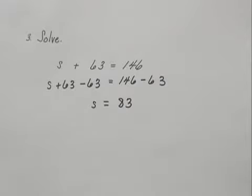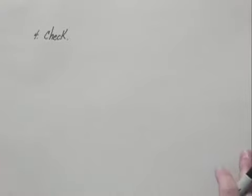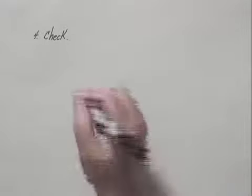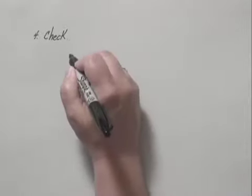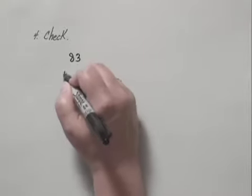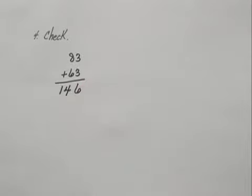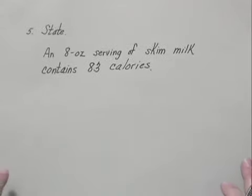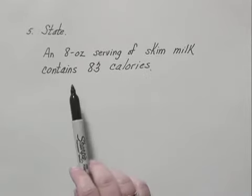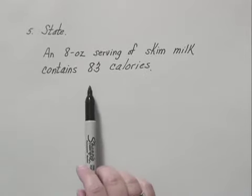Step four — to check — is a very important step. We need to think through the original problem. We're told that there are 63 more calories in whole milk than in skim milk. So we take what we found for skim milk, which was 83, and add 63 to it. We get 146, which we were told was the number of calories in an 8-ounce serving of whole milk. The final step is to state our answer clearly in a complete sentence: an 8-ounce serving of skim milk contains 83 calories.